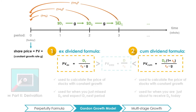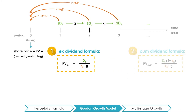In finance, we have learned that there are many synonyms for the cost of capital that all mean the same thing, such as the discount rate, the rate of return, and so on. Thus, you can also think of RE, the cost of capital, as the expected return from investing in stocks.